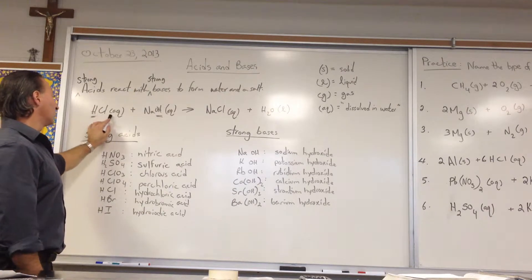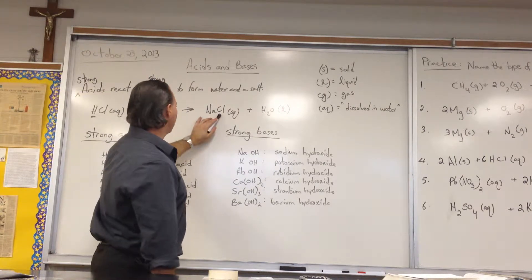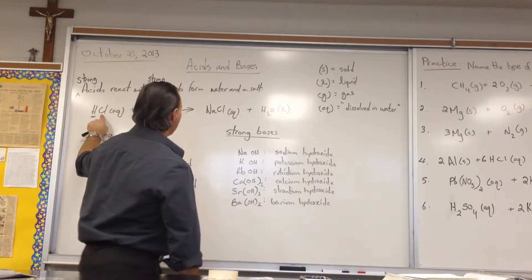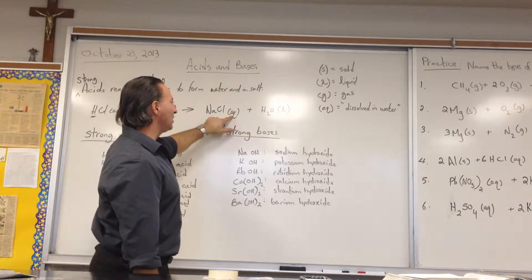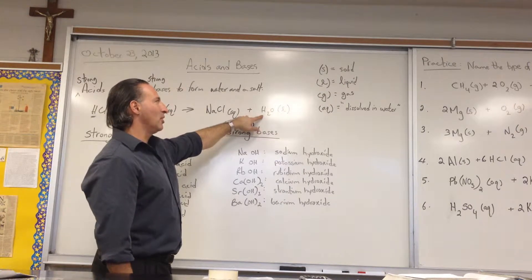So I gave an example here, hydrochloric acid reacting with sodium hydroxide. When you get sodium chloride, you see the sodium from the sodium hydroxide and the chloride from the hydrochloric acid combine to form the salt. AQ means it's dissolved in water, and then you also get water as a byproduct.